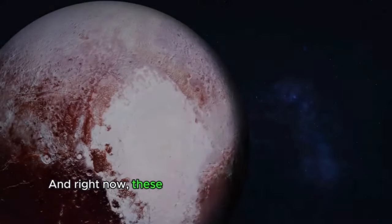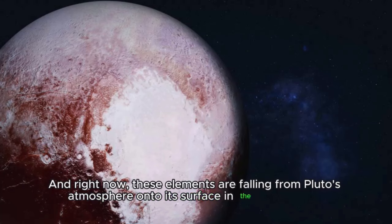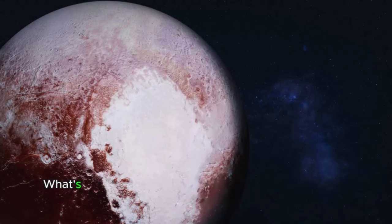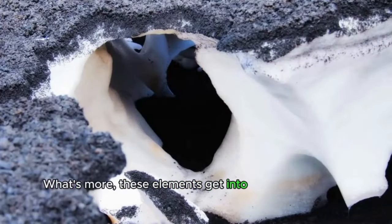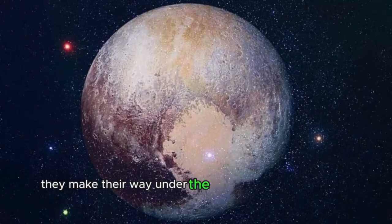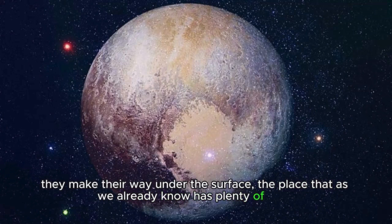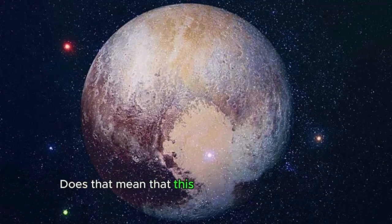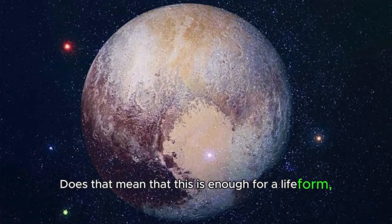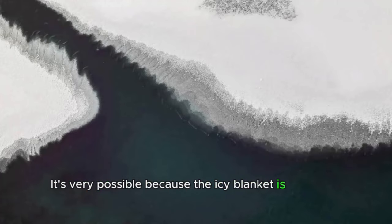And right now, these elements are falling from Pluto's atmosphere onto its surface in the form of rain. What's more, these elements get into the cracks and, in the process of cryovolcanism, they make their way under the surface, the place that, as we already know, has plenty of heat. Does that mean that this is enough for a life form, however primitive, to emerge underneath Pluto's surface? It's very possible because the icy blanket is hiding an ocean.